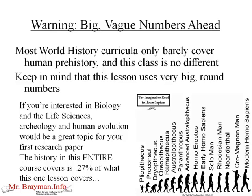This is going to be very brief. Most world history curricula only barely cover human prehistory, and this class is no different. We'll have a couple of quick lessons and a quiz, and that's pretty much it. This lesson uses very big, round numbers. If you're interested in biology and the life sciences, archaeology and human evolution would be a great topic for a research paper. The history in this entire course only covers 0.27% of the time that this one lesson covers, so we're dealing with very big time spans.